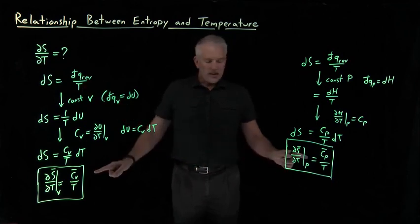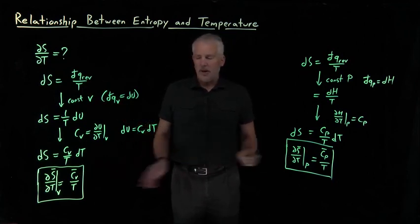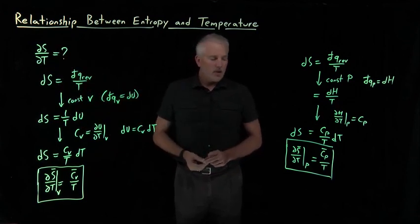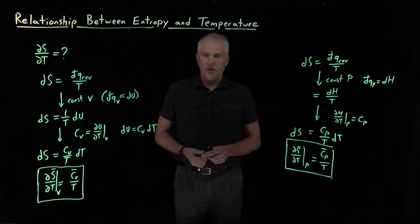So at least under these two conditions, constant volume and constant pressure, we have an expression for how quickly the entropy is changing with temperature. We can use those expressions to actually evaluate the numerical amount that the entropy increases when a system is heated up or cooled down when its temperature changes. So we'll do that next.